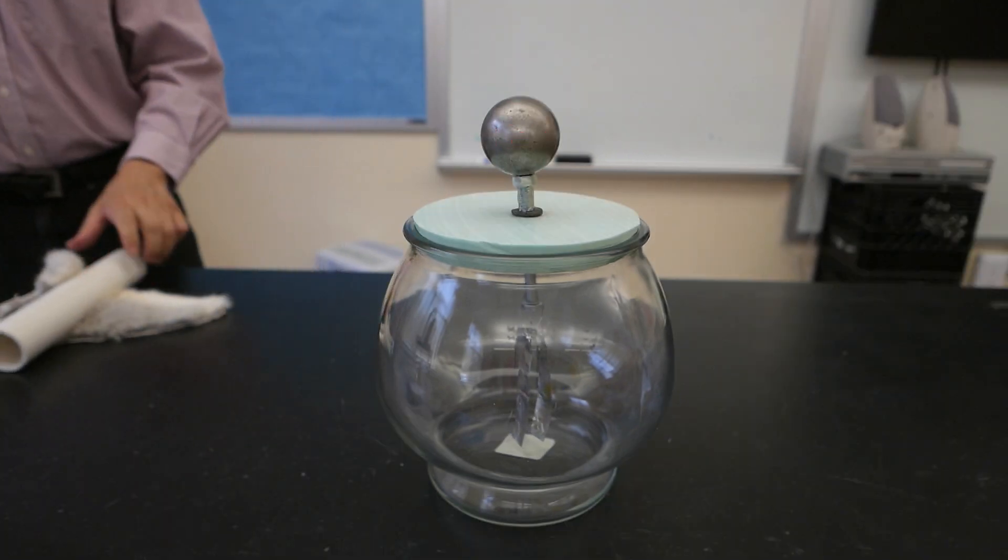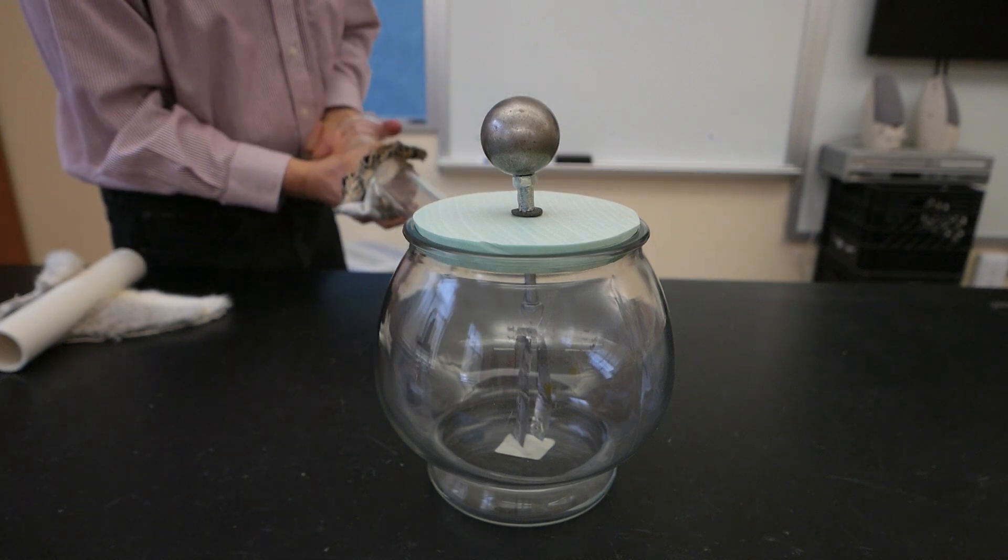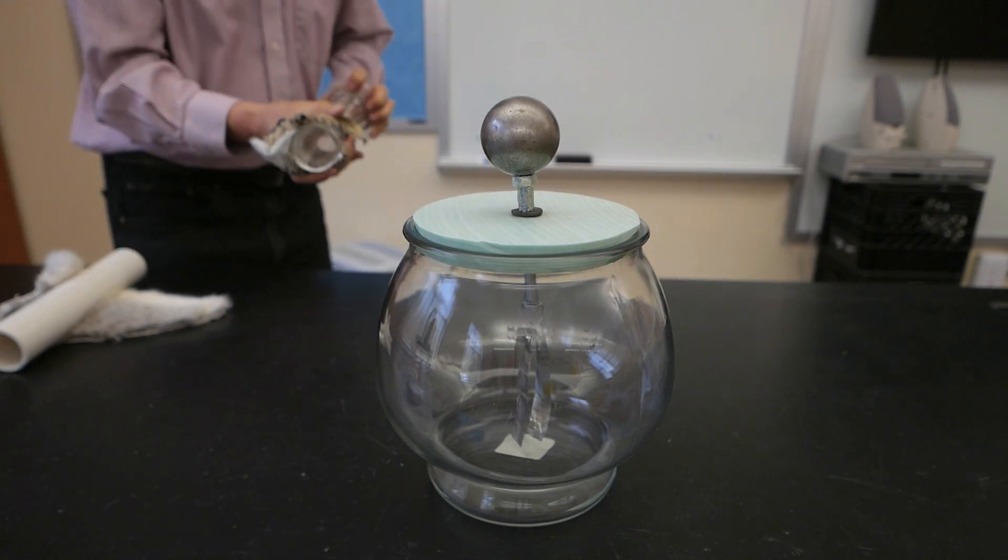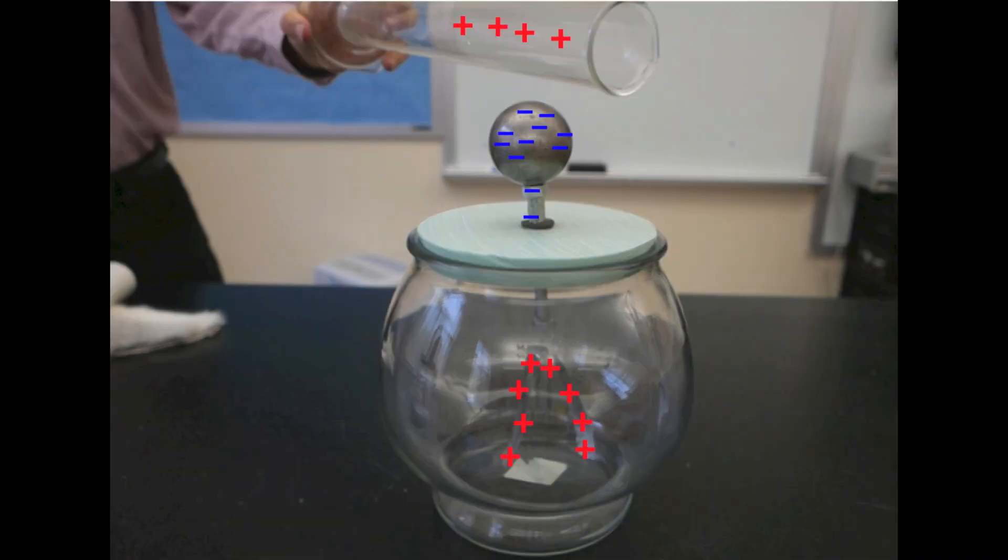Now let's try it with a positive charge. In this case, the electrons of the metal move towards the positively charged glass.